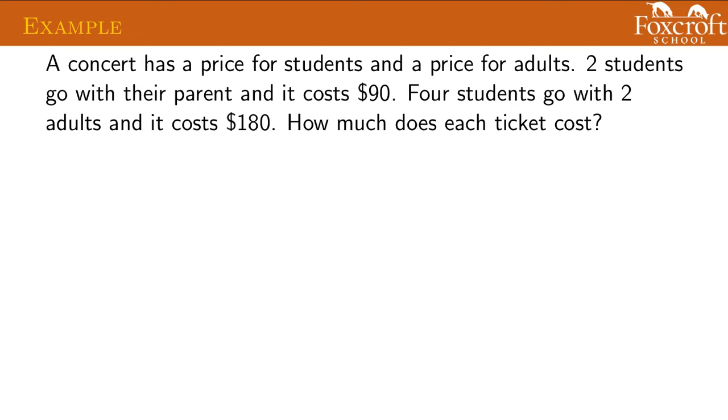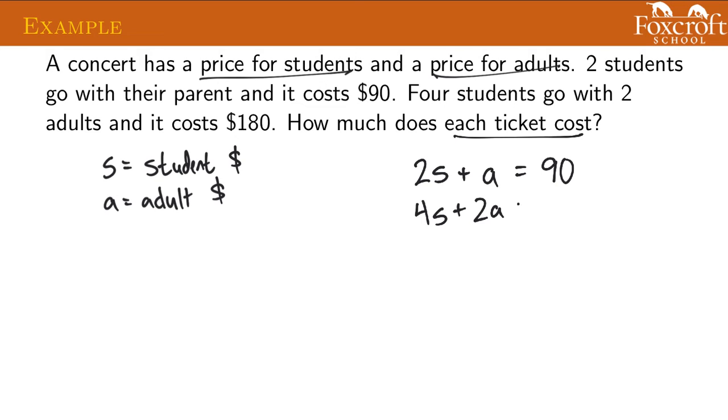Here's our first example. We have a concert that has a price for students and a price for adults. How much does each ticket cost? The things you're looking for are your variables. I'm going to do S for student price and A for adult price. We should be able to make two different equations using those letters. Two students go with their one parent, it costs $90. So two students is two times student price plus one adult ticket, that should be 90. Four students go with two adults, so we have four student tickets and two adult tickets, that should be 180.